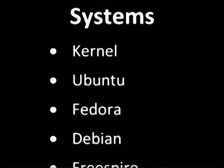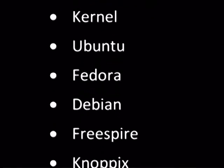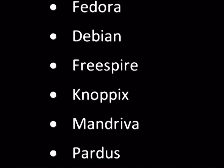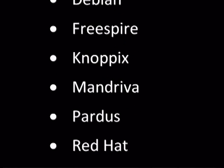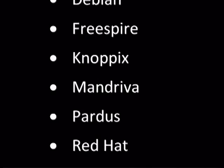It'll be available on our site at tinyurl.com/LetsTalkTech. Here's the list again: Ubuntu, Fedora, Debian, FreeSpyre, Knoppix, Mandriva, Puppy, and Red Hat. It'll be on our website — I should have a link to it as soon as possible. That's tinyurl.com/LetsTalkTech.